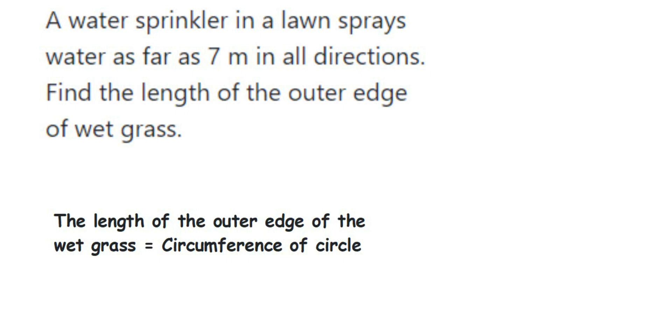Hey everyone, here is a question from circles. The question is: a water sprinkler in a lawn sprays water as far as 7 meters in all directions. Find the length of the outer edge of wet grass. So what they have given: